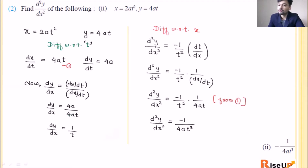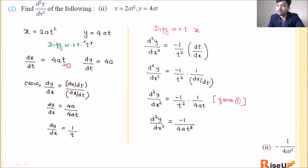Now find the second order derivative by differentiating again with respect to x. d²y/dx² = derivative of (1/t) = −1/t², but we are differentiating with respect to x, so we multiply by dt/dx, which equals 1/(dx/dt). From equation 1, dx/dt = 4at. So d²y/dx² = (−1/t²) · (1/4at) = −1/(4at³). This is the answer to the second question.